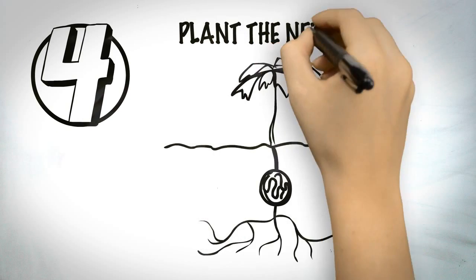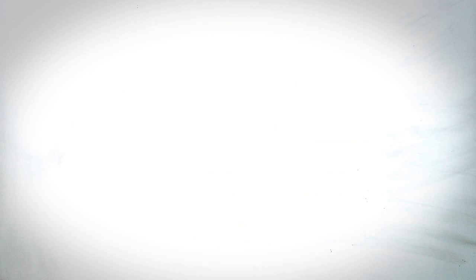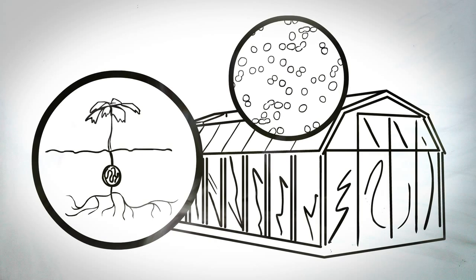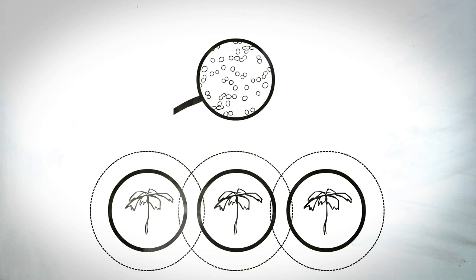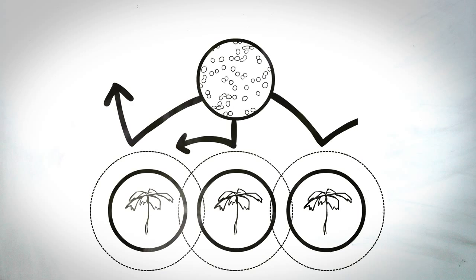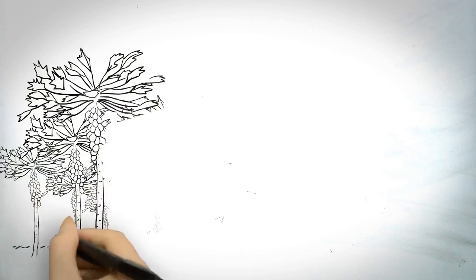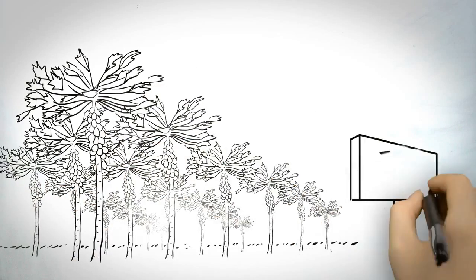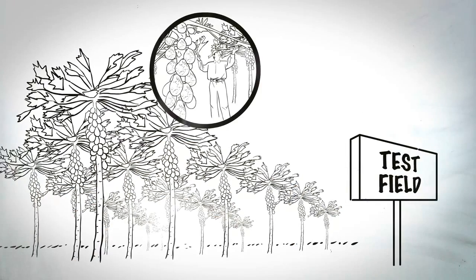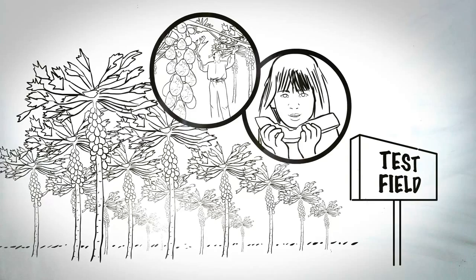Step four, plant the new seed and test it. The final step was to plant the seeds and carefully test the resulting plants. One line of plants demonstrated consistent resistance to the virus. After several years of testing, it was determined that this line performed well on the farms, was safe for people to eat, and was of commercial quality.